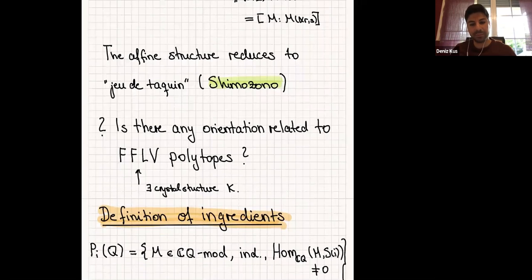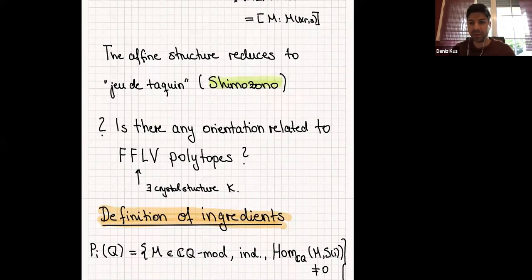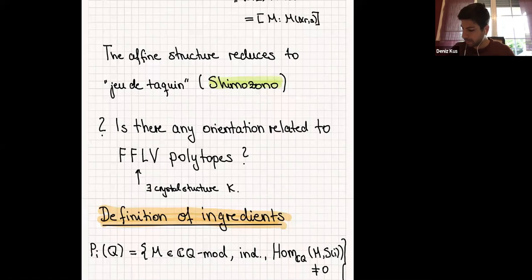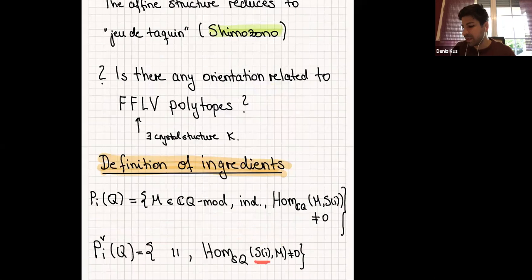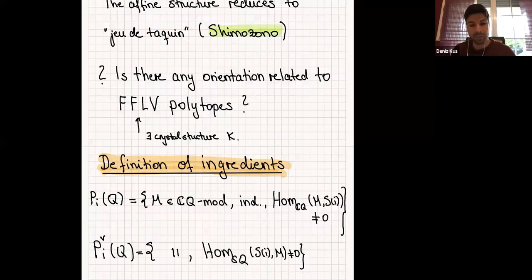We need S_i(Q) and S_i^∨(Q). I need an order: N ≤ M if there is a non-zero homomorphism. S_i(Q) is the collection of all direct sums M1 ⊕ ⋯ ⊕ Mk where M1 to Mk form an antichain in P_i(Q) — they are mutually non-comparable. S_i^∨ is the same, taking antichains in P_i^∨. Let's do an example and go back to the Auslander-Reiten quiver.